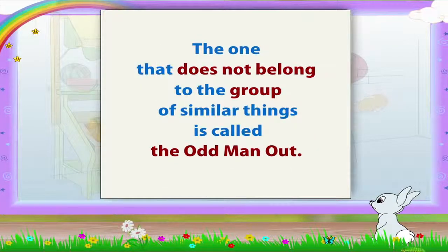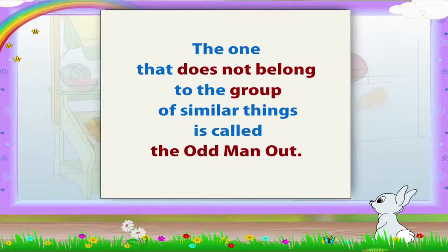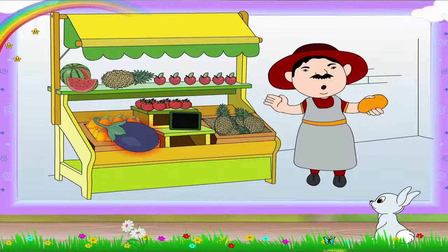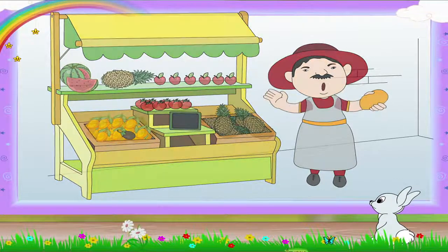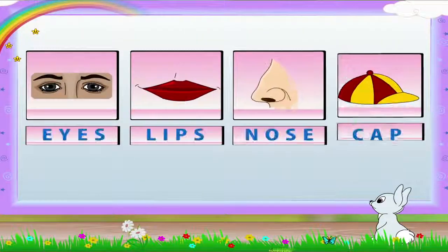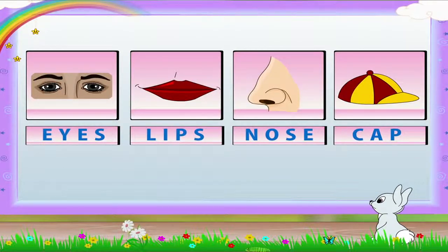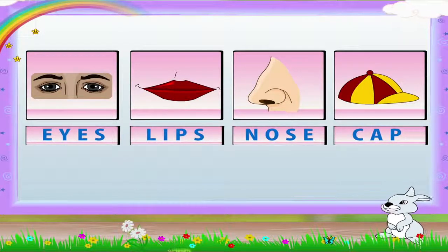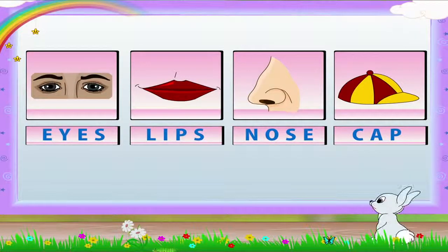It is a vegetable. The one that does not belong to the group of similar things is called the odd man out. So the brinjal is the odd man out in the basket of fruits. Look at these pictures - one picture in each set does not belong to the group. It is the odd one out. Let us circle the odd one in each set.